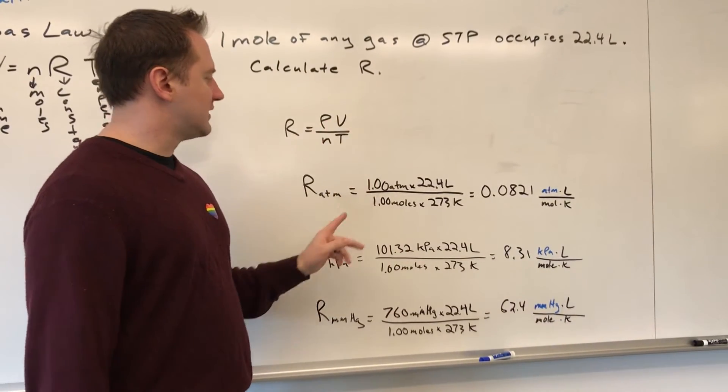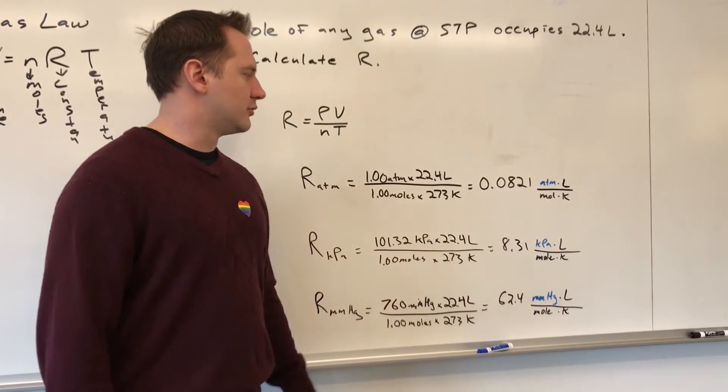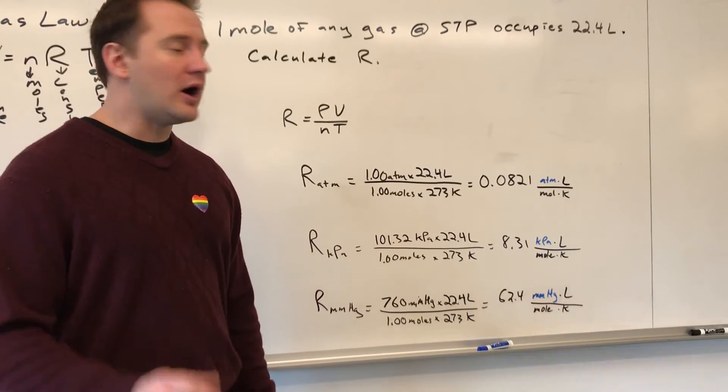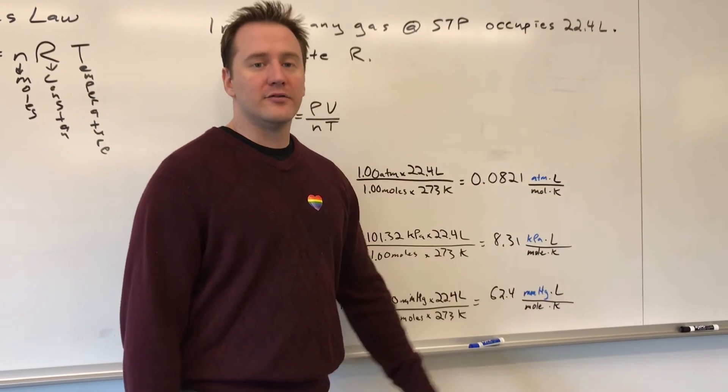So, if the pressure is listed in atmospheres, plugging all of these values in, one atmosphere times 22.4 liters, one mole, 273 Kelvin, we would get a value for R of 0.0821 atmospheres times liters per mole Kelvin.